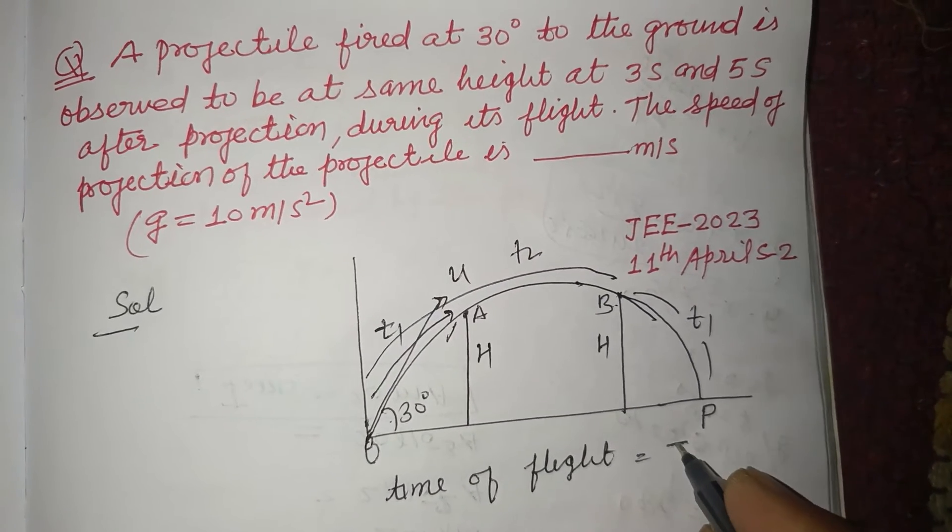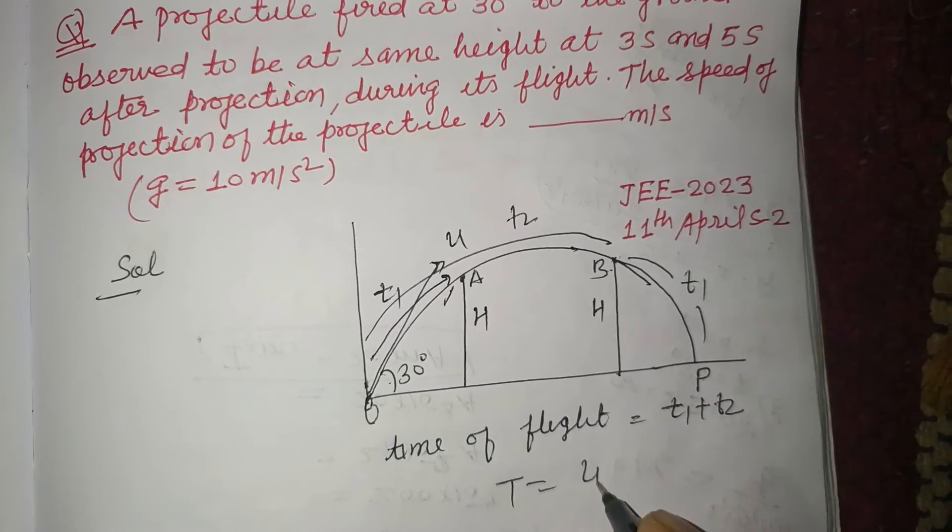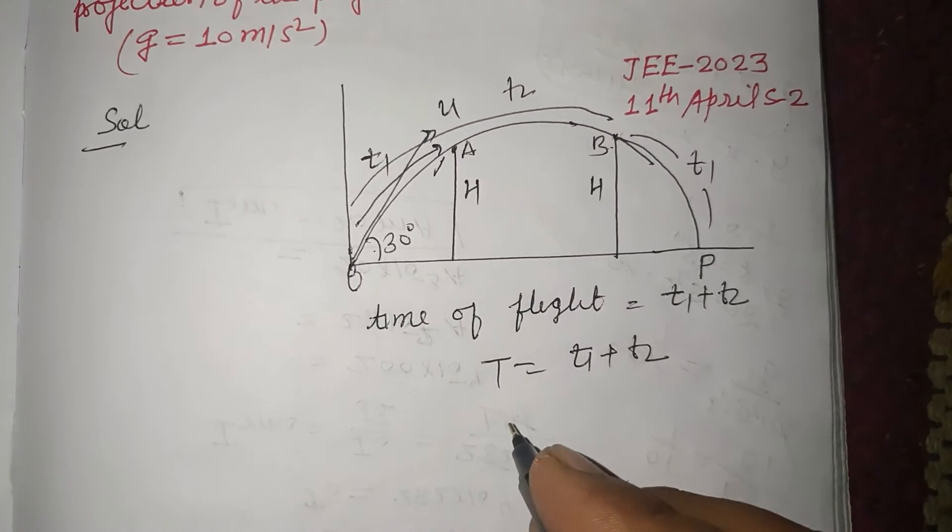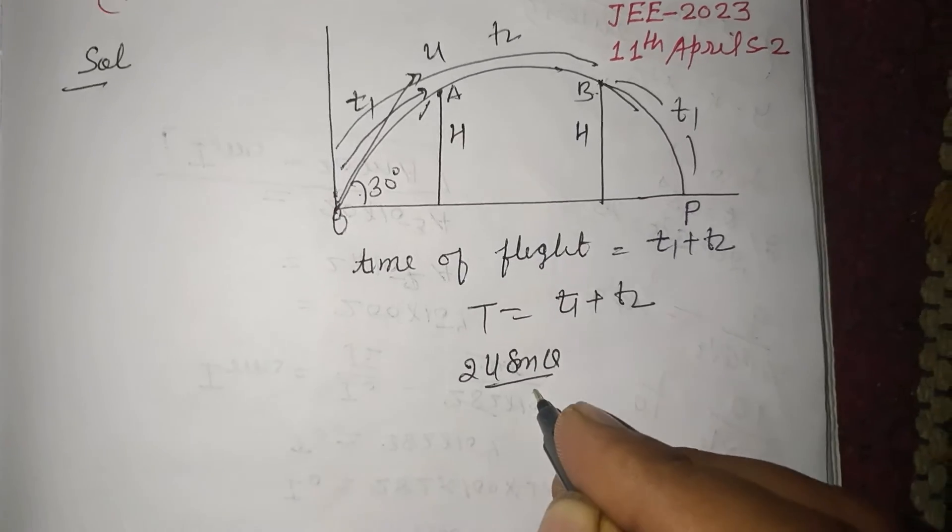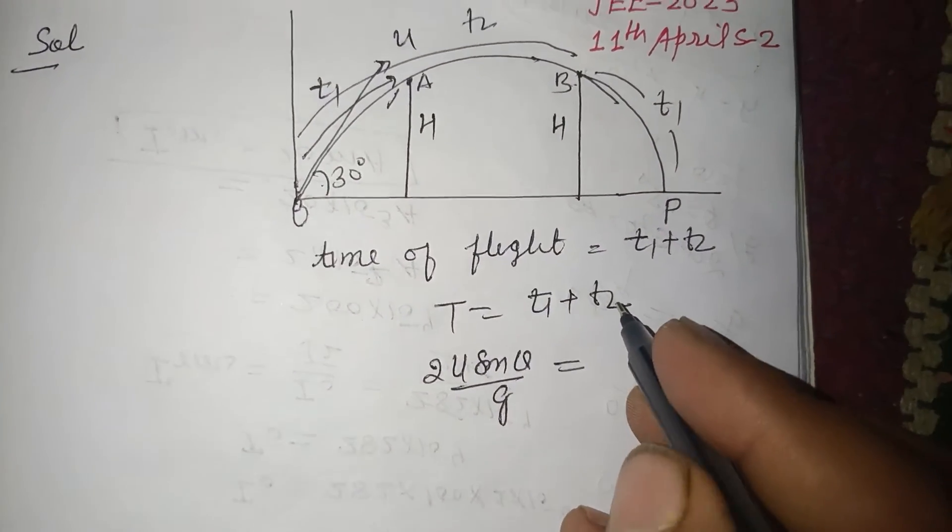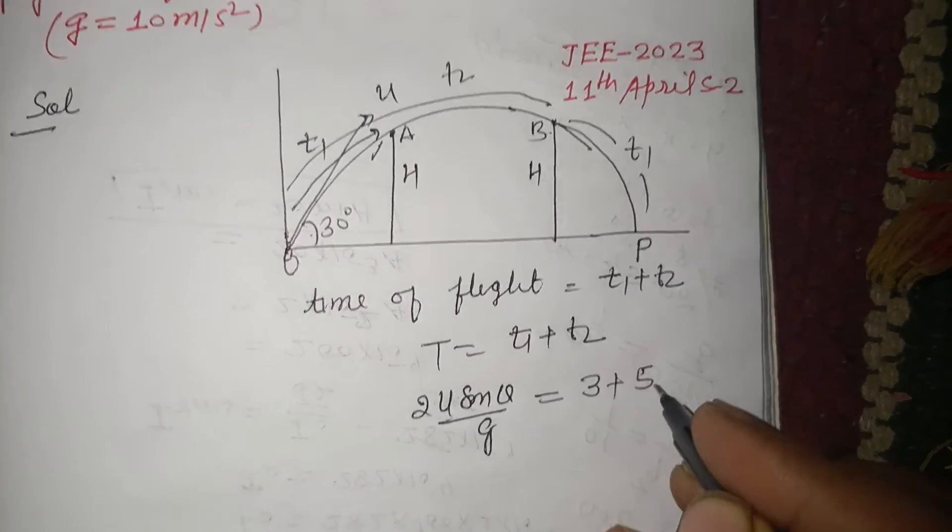So T equals t1 plus t2. And you know that T is 2u sin θ upon g. t1 is given as 3 seconds and t2 is given to us as 5 seconds in this question.